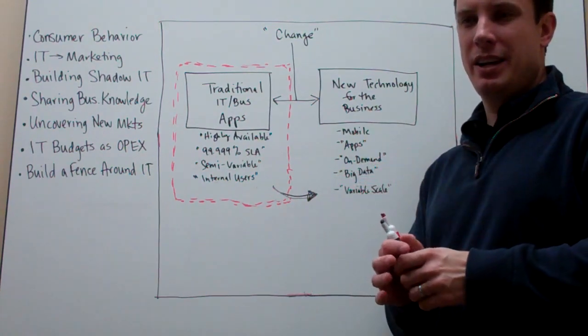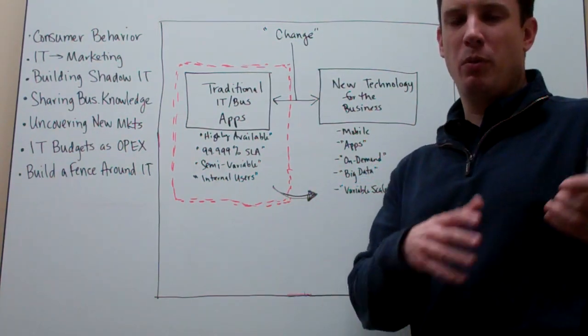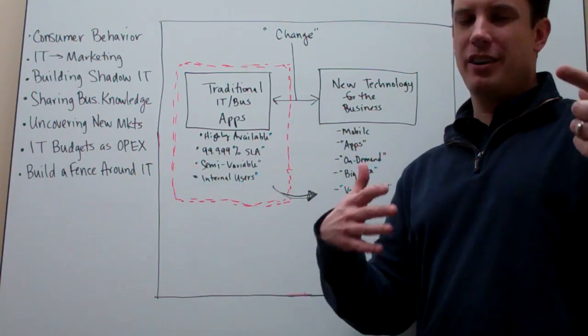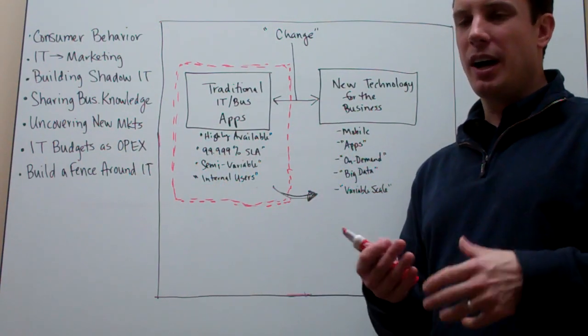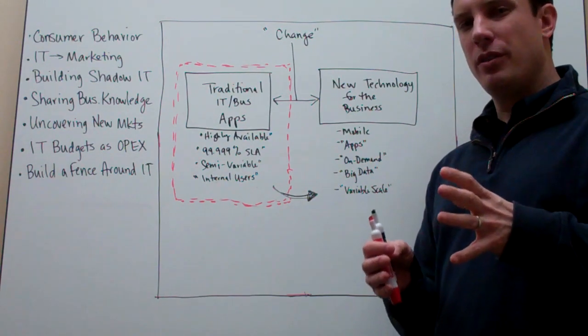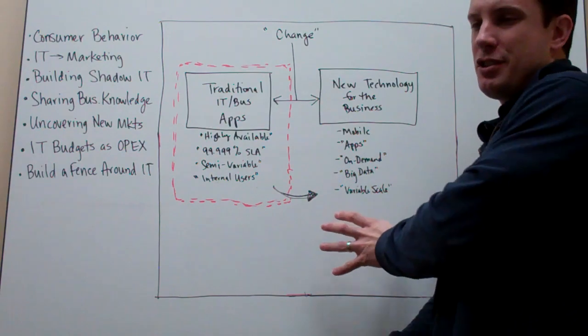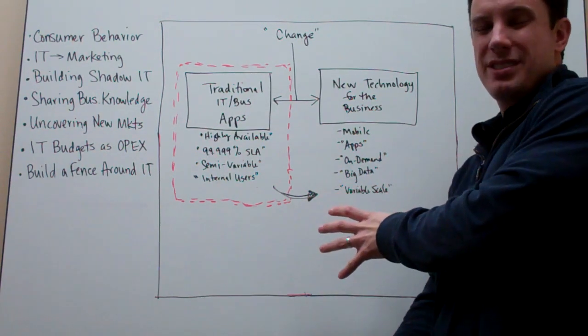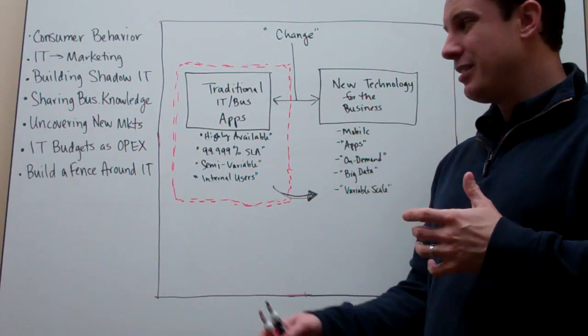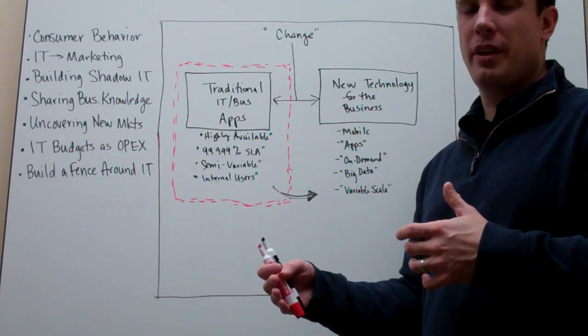It's like combining linemen in football with wide receivers in football, two very, very different types of things. And understanding that there's a change happening. This change is happening really, really fast. This is the part that you're trying to drive for your business that's very uncertain. This is the part that's very certain. You know what to do with it.